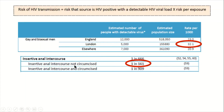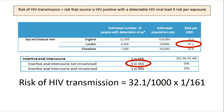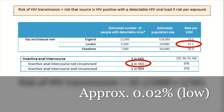For insertive anal intercourse where A is not circumcised — circumcision is beneficial regarding HIV transmission as the risk is much lower when someone is circumcised — the risk per exposure is 1 in 161. Therefore, the risk of transmission is 32.1 per 1,000 multiplied by 1 in 161, which works out to be 0.02%, which is very low.